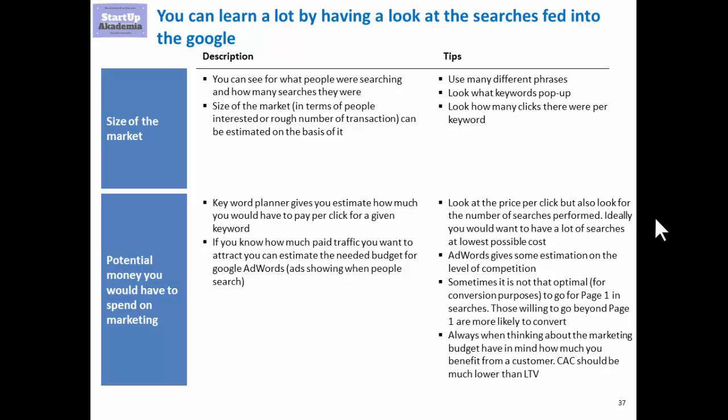First of all, it enables you to estimate the size of the market. You can see what people were looking for and how many times in a given period they were looking for it, which enables you to estimate how big the market is. It is also very important to differentiate between searches and things you share or like on social media. Searches are usually much stronger because they indicate not only potential consumption, but people actually willing to take money from their pocket and pay for a product.